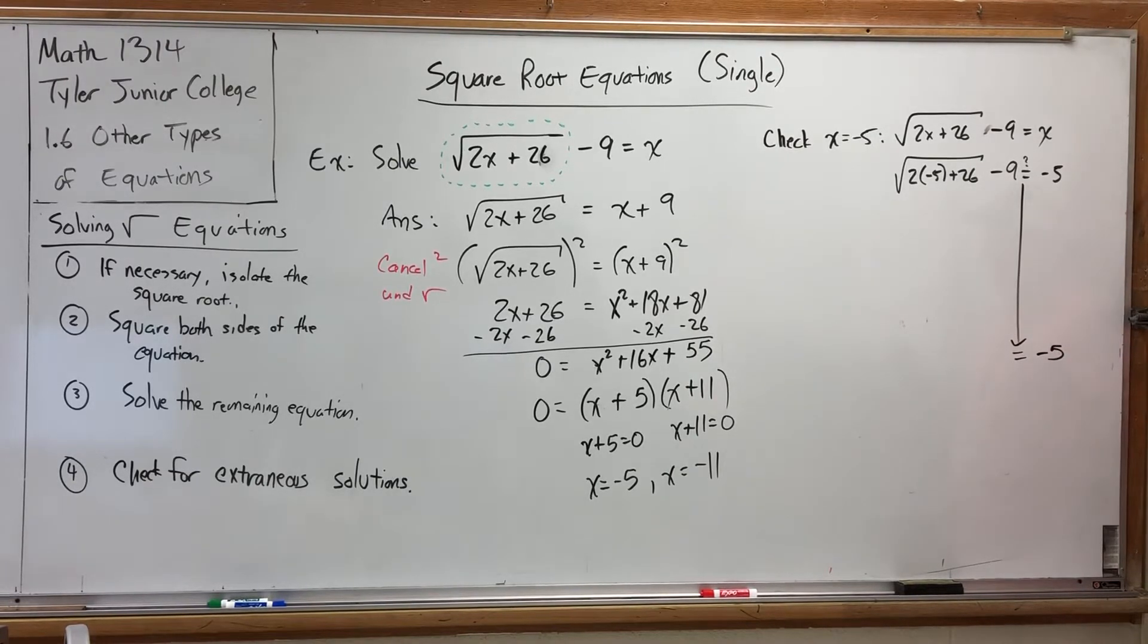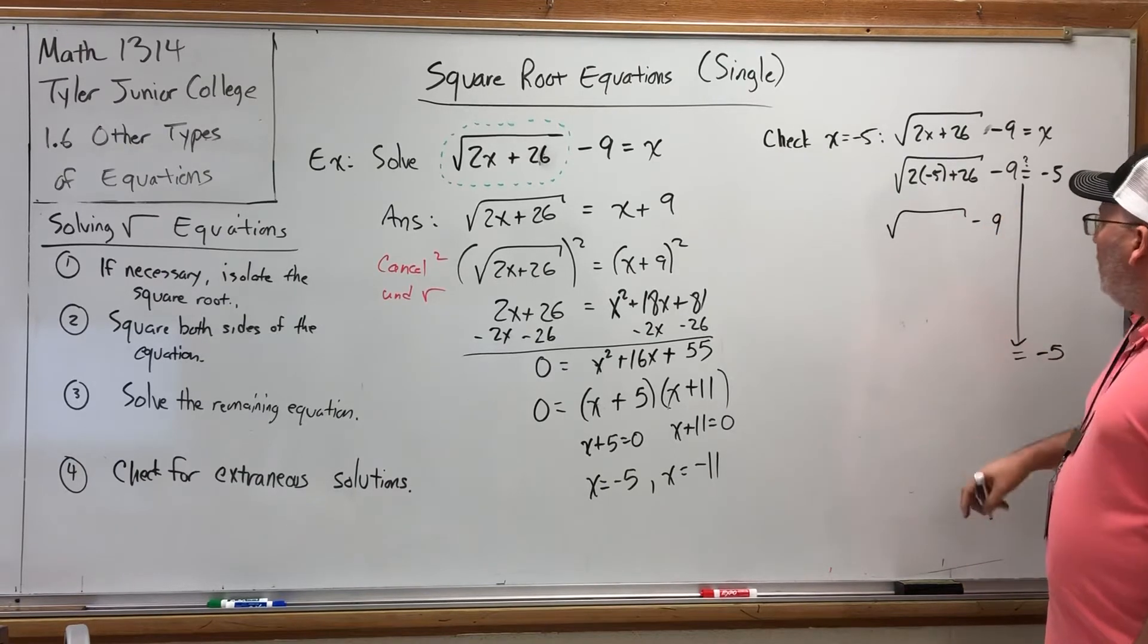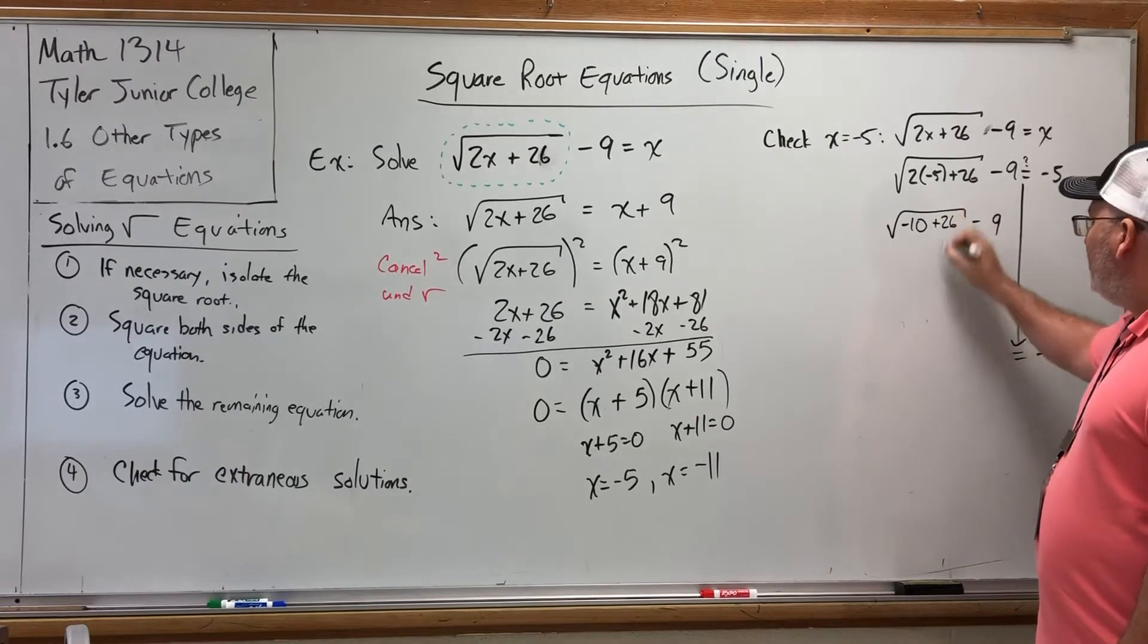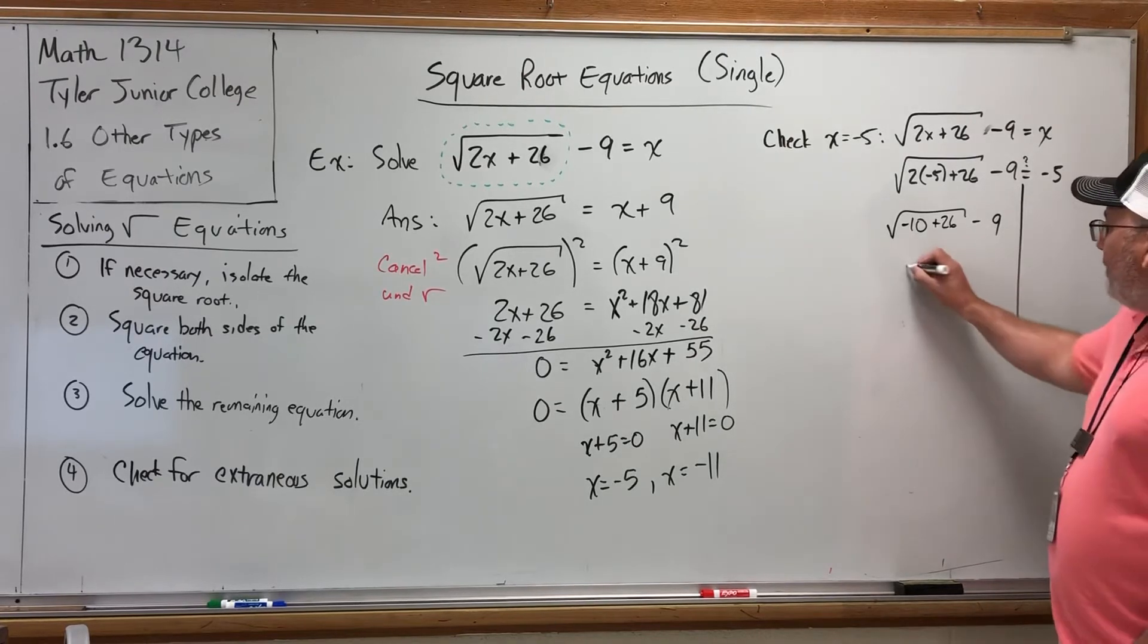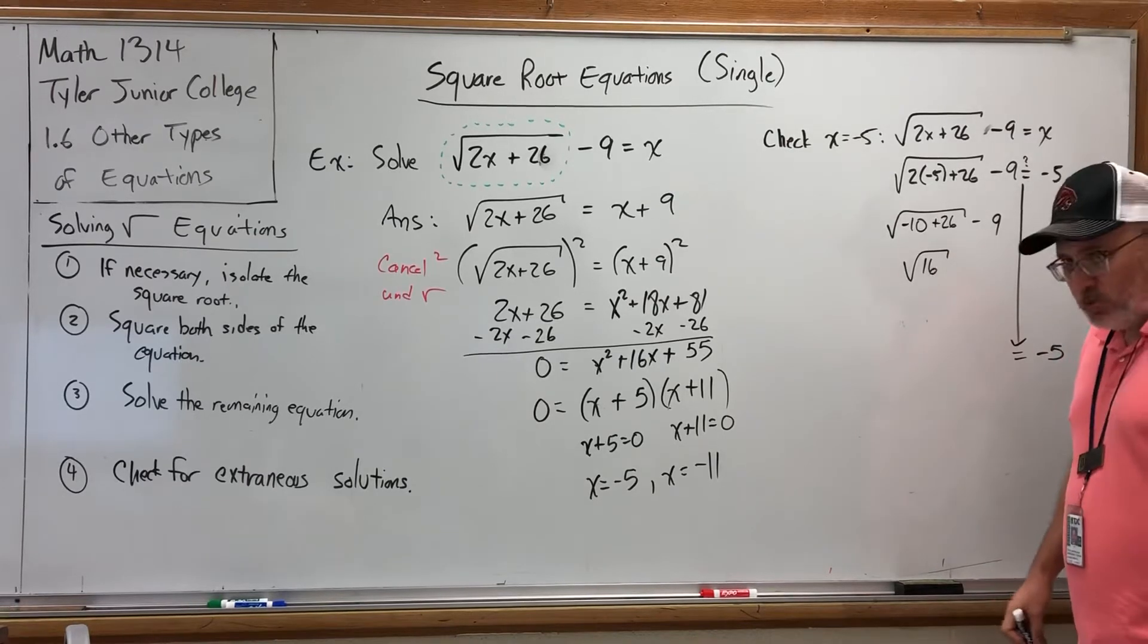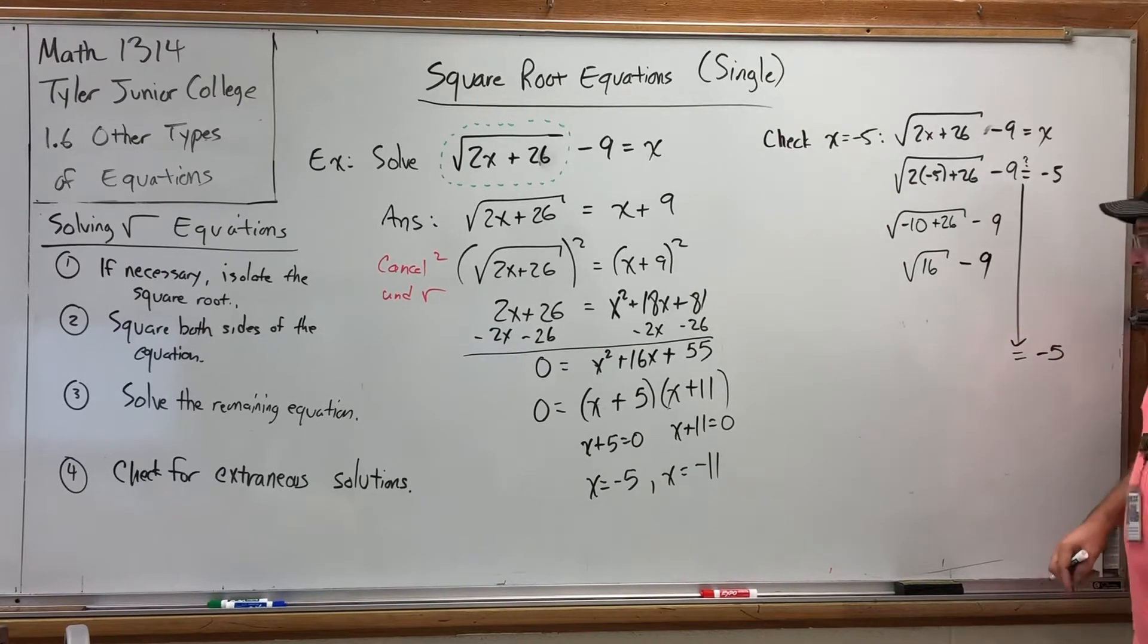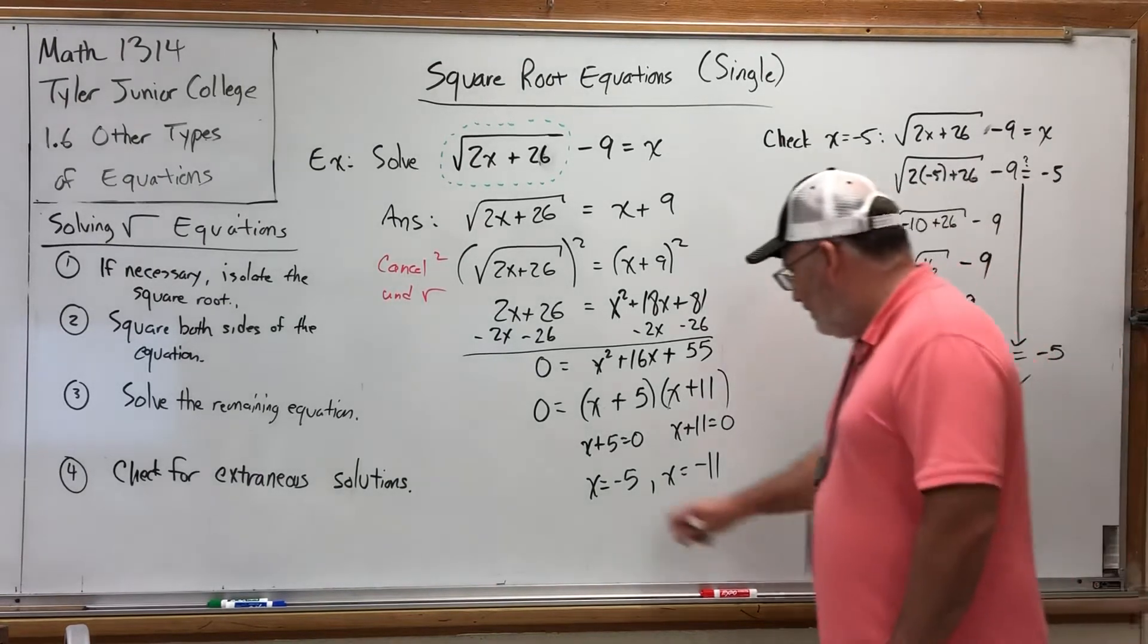There's nothing to work on the right side, so it's just negative 5. So now the question is, when we work the left side will we also get negative 5. It's time for the order of operations. Under the square root, we have to multiply first. 2 times negative 5 is negative 10. We haven't added 26 yet. We haven't square rooted yet. We haven't subtracted 9. Under the square root, now we have to add. Negative 10 plus 26 is 16. We haven't square rooted yet. We haven't subtracted 9 yet. At this point, I can tell that it's going to work because the square root of 16 is 4, and 4 minus 9 is negative 5. Yes, negative 5 is a solution. I'll put a box around it.